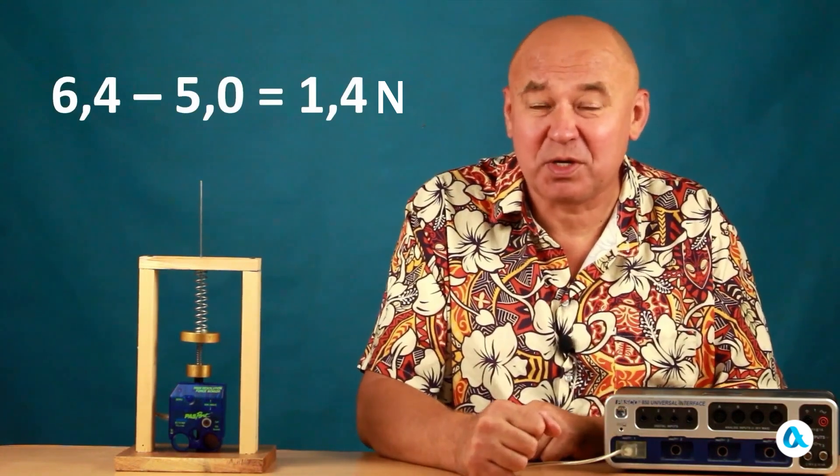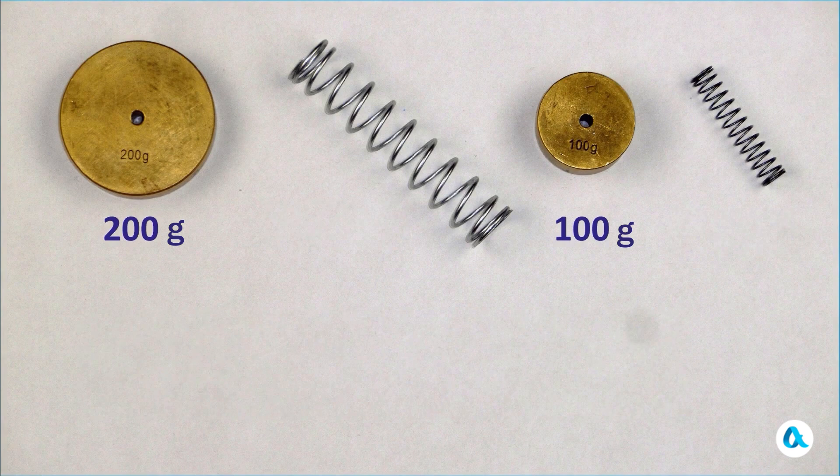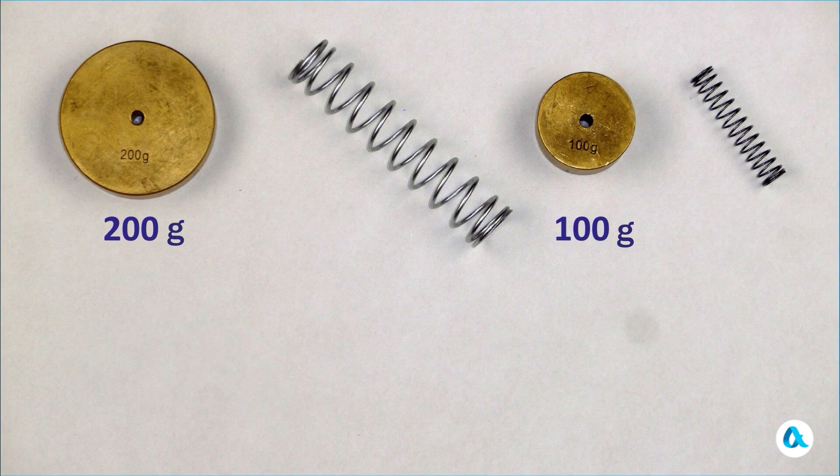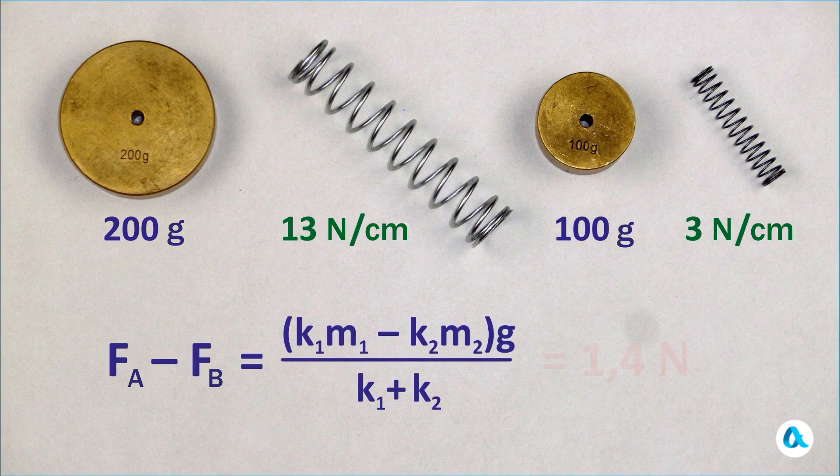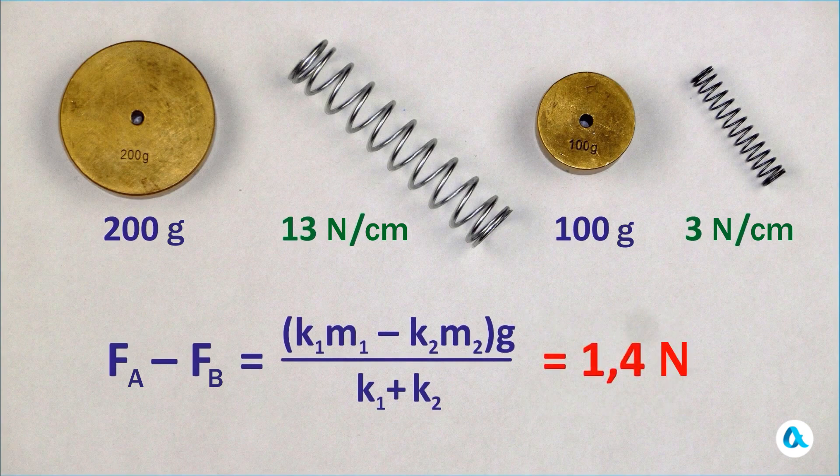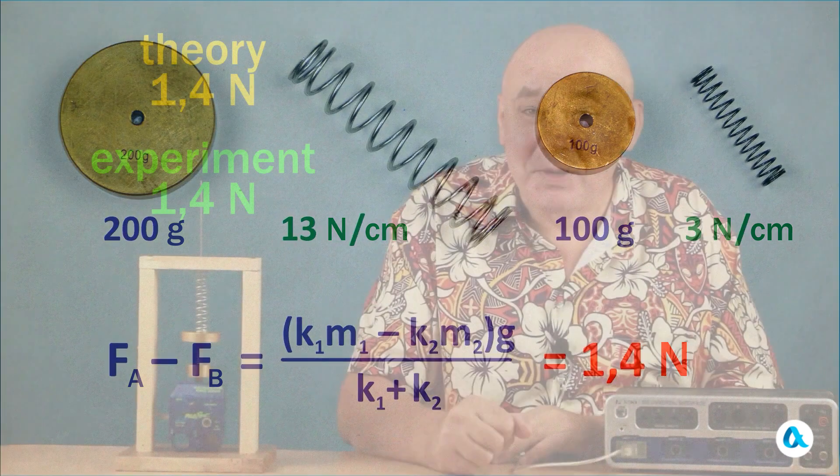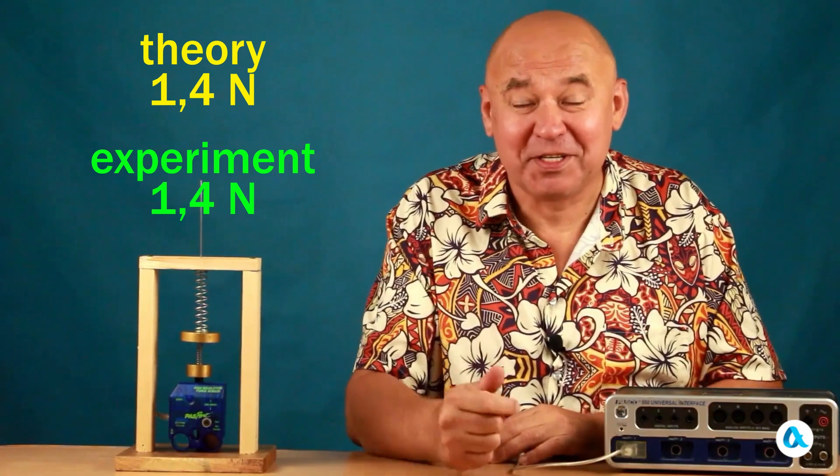Now this result needs to be compared with the predictions of the theory. In our experiment the masses of the weights were 100 and 200 grams while the stiffness of the springs according to our measurements was equal to 13 and 3 newtons per centimeter. And the theoretical difference in forces is 1.4 newtons and here we observe a wonderful agreement between theory and experiment.